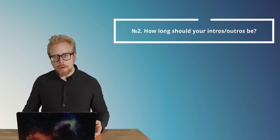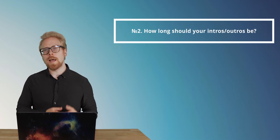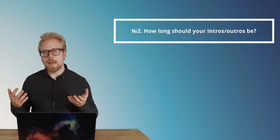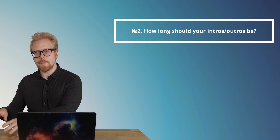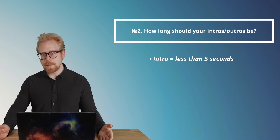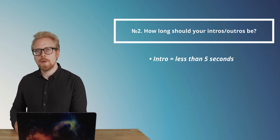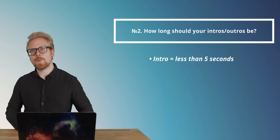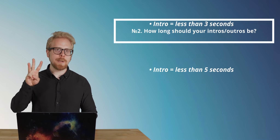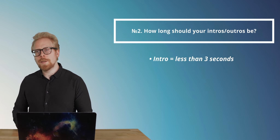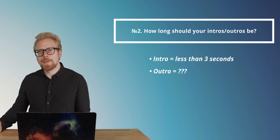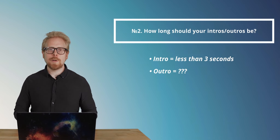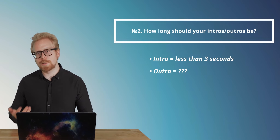The second question you need to answer is: how long should your intros and outros be? If you are adding intros to your videos, they need to be short — at max five seconds long. We don't recommend any intro bumper being five seconds long unless it is the intro bumper to the entire series. After that, if you are going to do intro bumpers, they should be at max three seconds long. Outros can be as long as you want because your learners will eventually just start skipping them anyway.